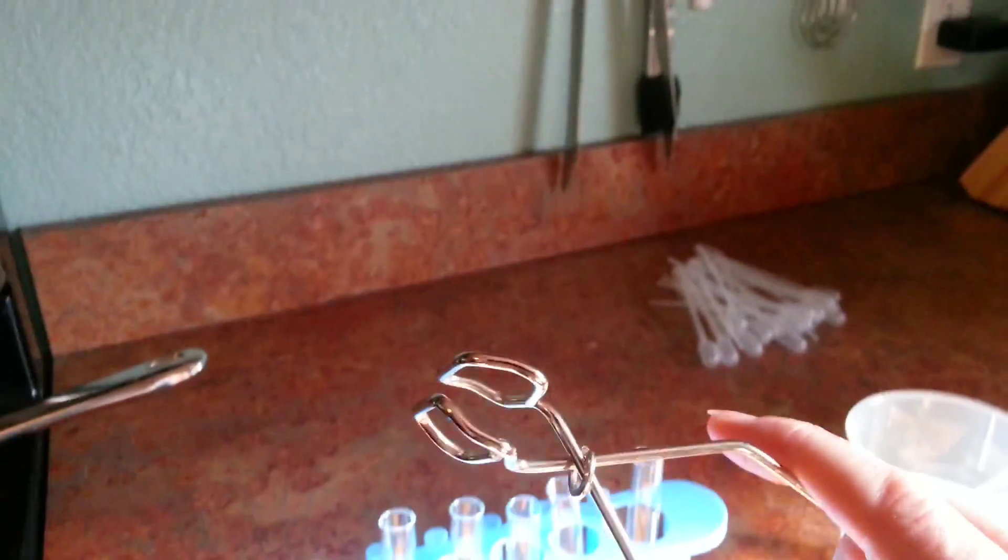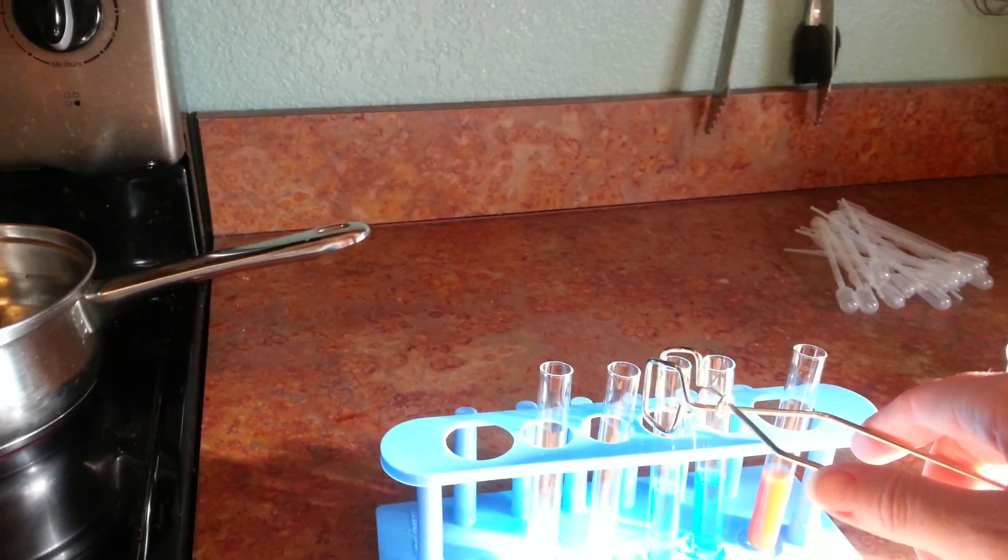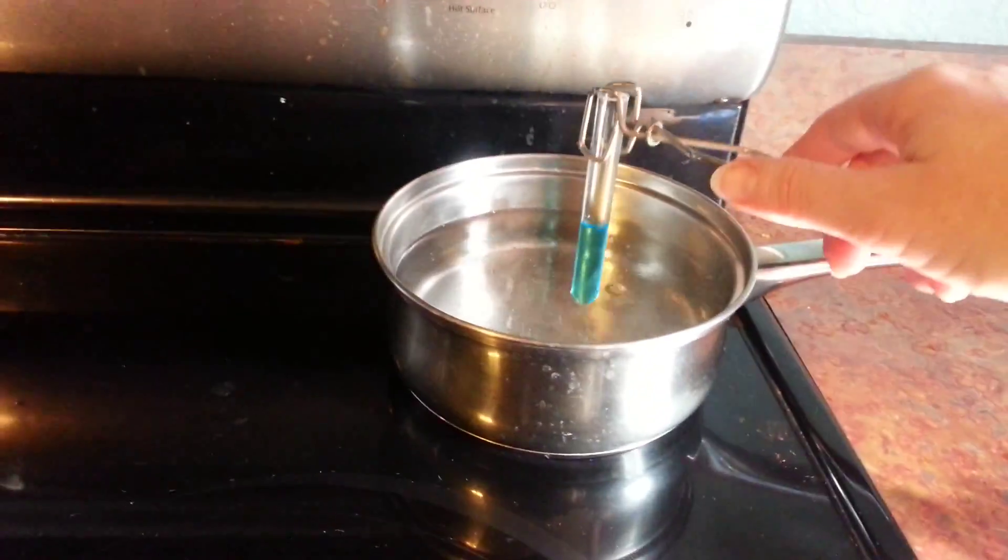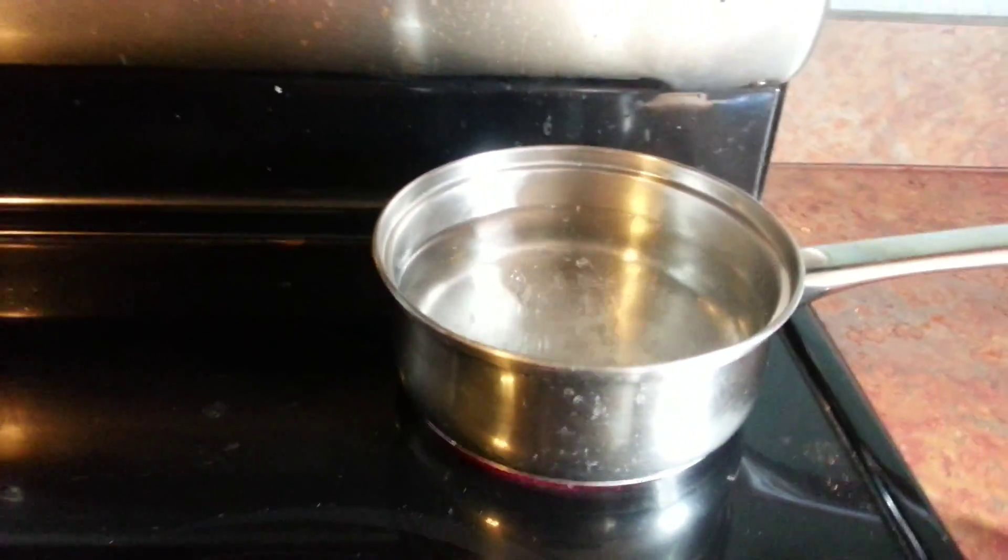After you have it in the test tube you're going to use your test tube clamp to clamp it around and this will be easier for you to do since you're not going to be holding your phone in one hand. Hold that and then put it into a boiling water bath and this is just a pot with some boiling tap water in it. It's been set to boil already.